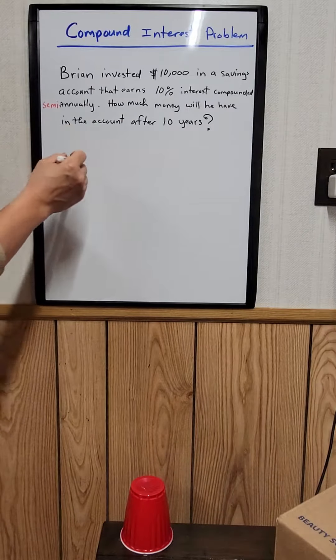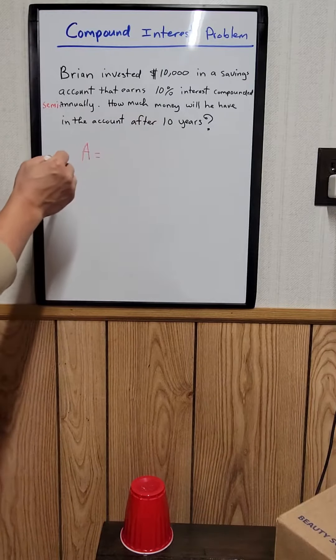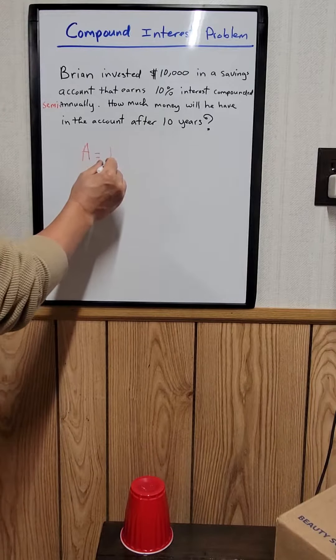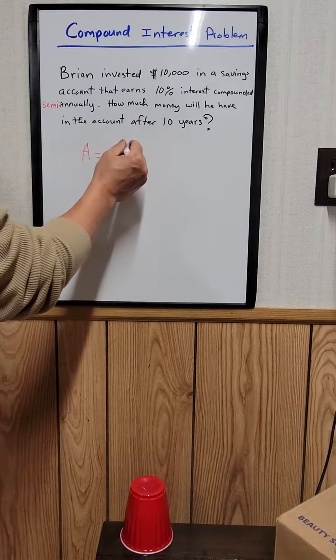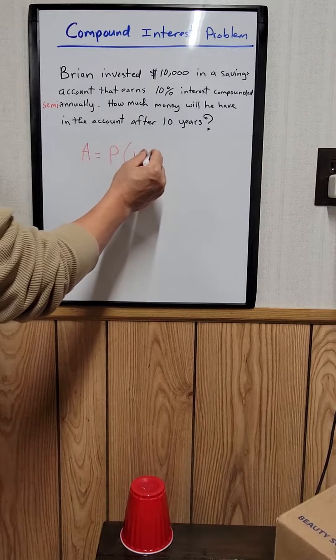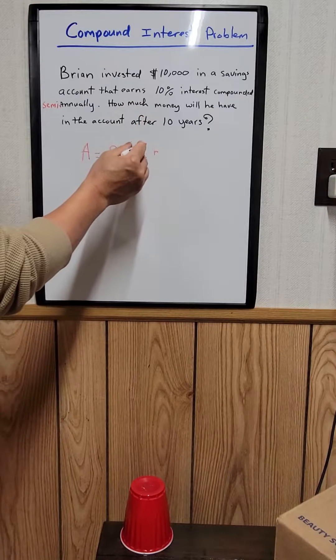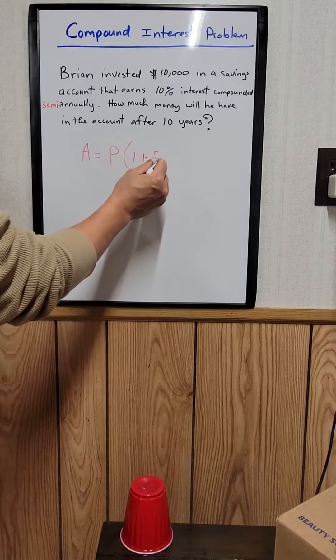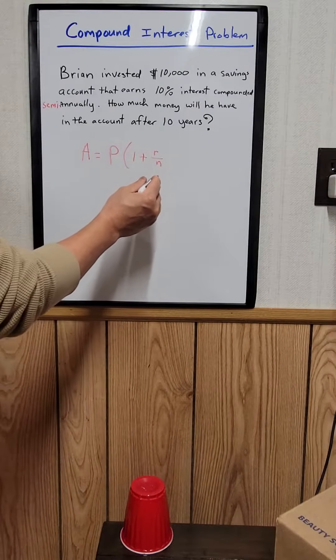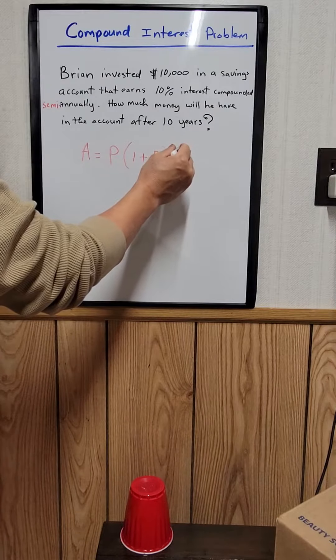There's a formula you can use. Let A equal the amount of money he will earn after 10 years, equal to the initial principal P, then (1 plus R), where R is the interest rate, divided by M, the number of times it is compounded, raised to M times the total time.